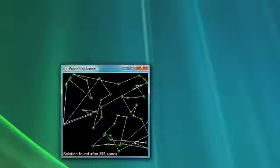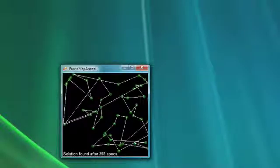The simulated annealing app is about to start. It will train very quickly. As you can see, it has already found a solution after 398 epochs. Simulated annealing finds a solution to the Traveling Salesman problem much faster than genetic algorithms do.